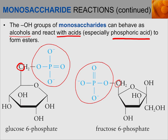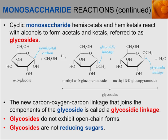Similarly with fructose, we can end up with a phosphate group on the sixth carbon — the last carbon in the ring. Cyclic monosaccharide hemiacetals and hemiketals can also react with alcohols to form acetals and ketals, referred to as glycosides. As an example, let's start with alpha-D glucose. In the cyclic form we have our anomeric carbon to the right of the oxygen, and the OH group can be either up or down.